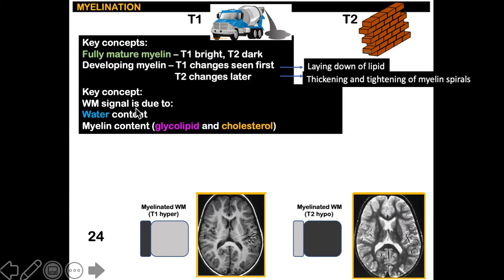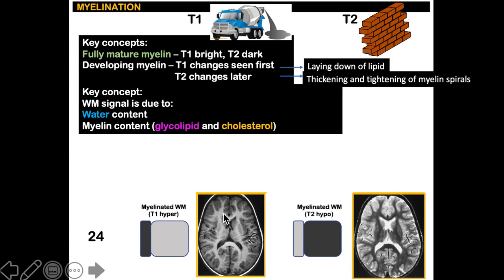The white matter signal is due to several things, including water content and myelin content. At birth, the white matter tracts are still filled with water. Therefore, it is T1 dark, unlike the adult configuration.